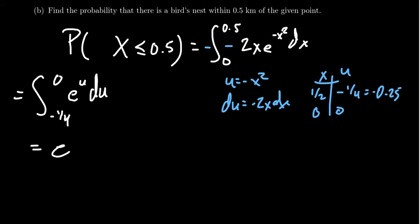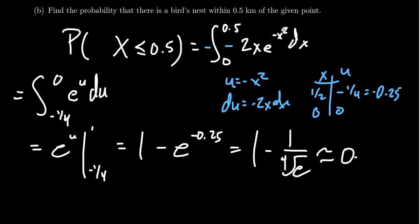The antiderivative is e^u as you go from negative one-fourth to 0. So you get 1 minus e^(-0.25), or if you prefer, 1 minus 1 over the fourth root of e. We'll just estimate this with the calculator. We want a percentage. With your calculator, you get 0.2212. So there's about a 22% chance, a little bit less than a quarter of a chance, that if you go half a kilometer, you'll find a bird's nest in some tree. So we're talking about a one-half kilometer radius.